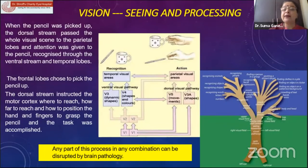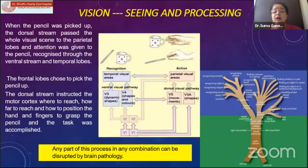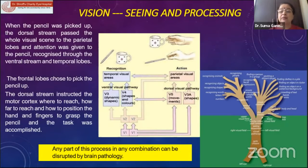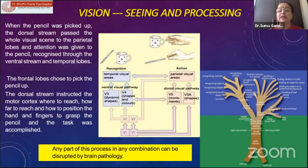Vision involves multiple brain regions working together. I can recognize a pencil via the temporal cortex; the frontal lobe chooses the pencil; then the dorsal stream — the parietal-occipital lobe — instructs where to reach, how far to reach, and how to position the hand and fingers to grasp the pencil. It is such a complex process in the brain that we don't realize because everything is easy for us — but this entire task is what is difficult in a child with cerebral visual impairment.